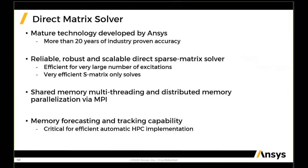We have seen models today from a full assembly with 128 ports. The direct matrix solver is very efficient with an S-matrix-only approach. It also has shared memory, multi-threading, and distributed memory parallelization enabled via MPI. Memory forecasting and tracking capability are critical items for efficient automatic processing and HPC implementation.